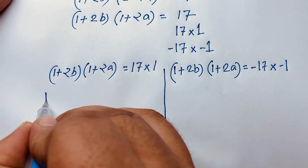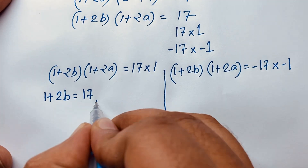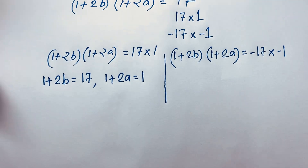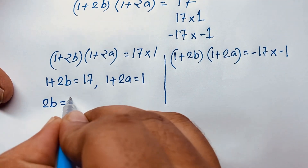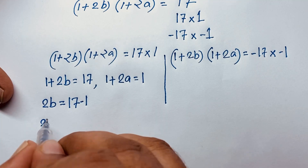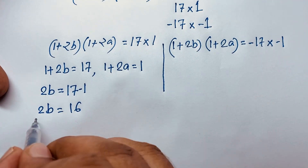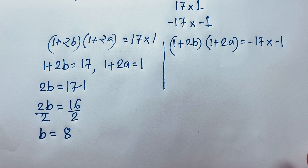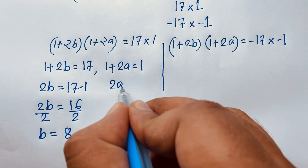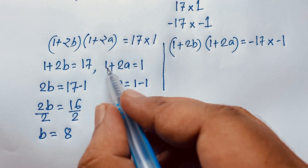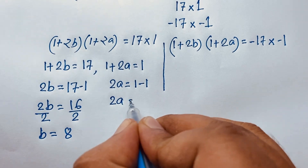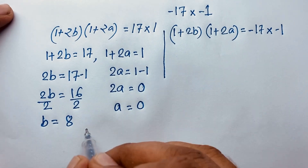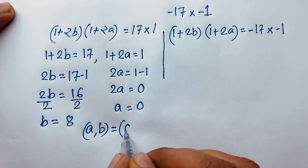Case 1: comparing (1 plus 2B) times (1 plus 2A) equal to 17 times 1. So 1 plus 2B equals 17, giving 2B equals 16, so B equals 8. And 1 plus 2A equals 1, giving 2A equals 0, so A equals 0. Our first answer is A equals 0 and B equals 8.